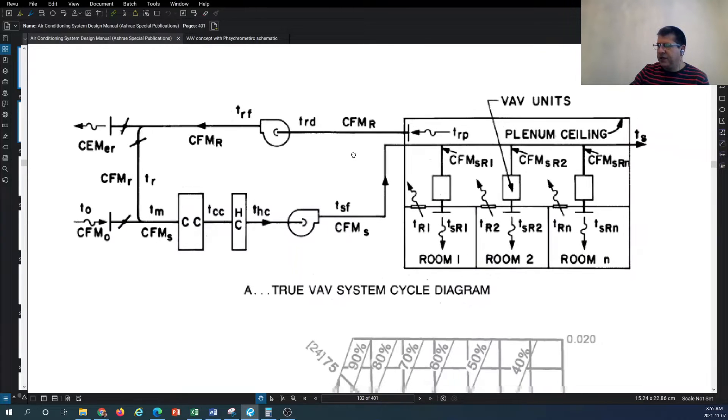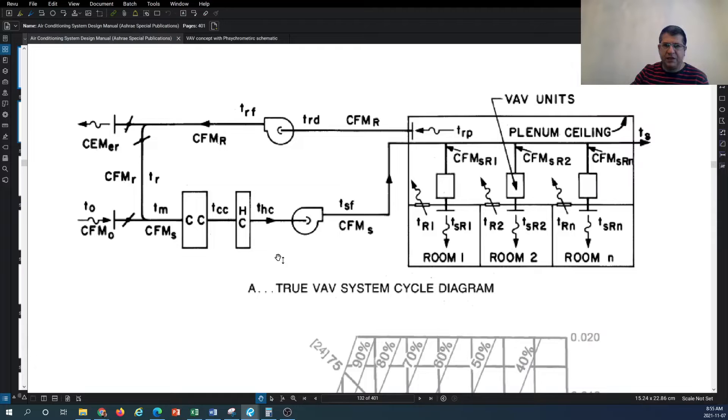The configuration of the air volume system is such that you have terminal units or VAV boxes, or variable air volume boxes, as you can see shown by these rectangles. This variable air volume terminal unit determines the volume of air to get into the rooms, and this volume of air can change based on the room cooling or heating demand depending on the modes of operation.